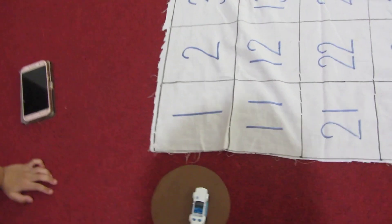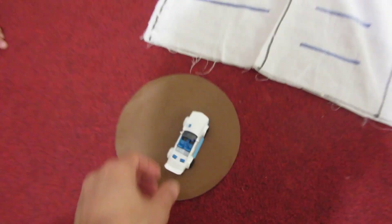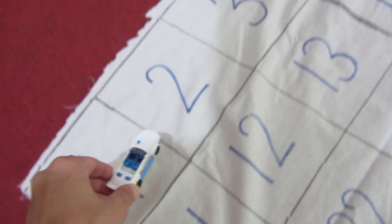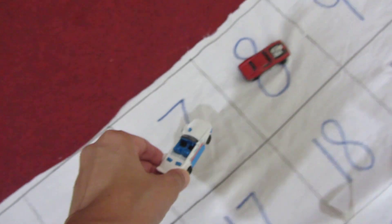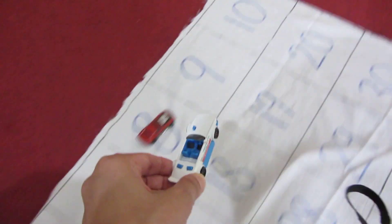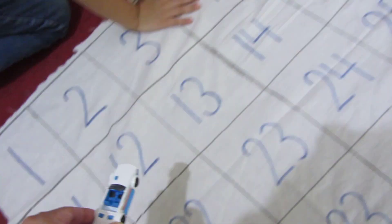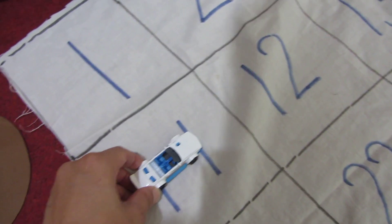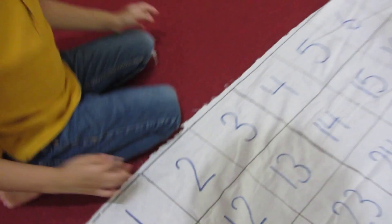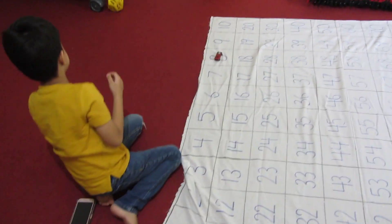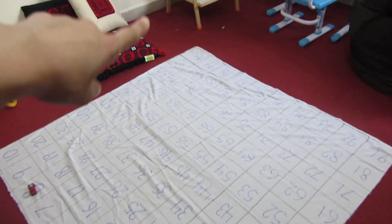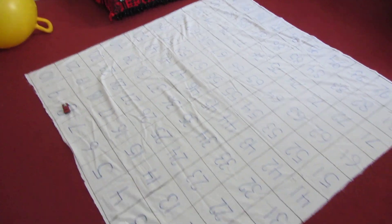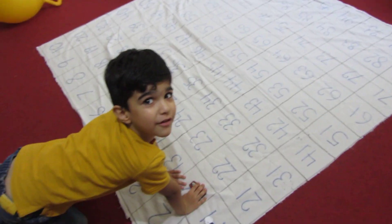I got 11, so we're going to move 11 spaces: 1, 2, 3, 4, 5, 6, 7, 8, 9, 10, 11. Okay your turn! Whoever reaches 100 first wins. I got 5!